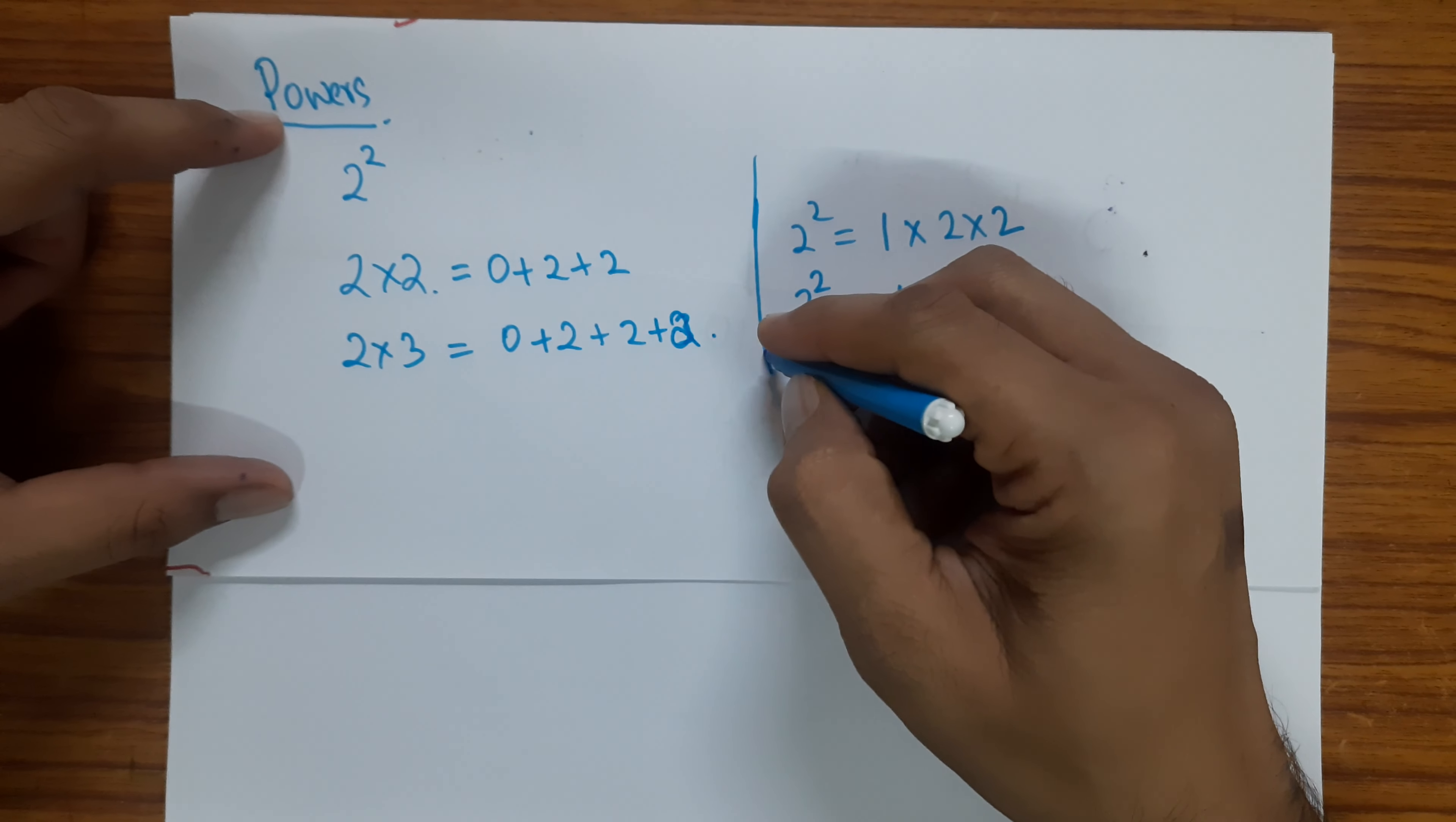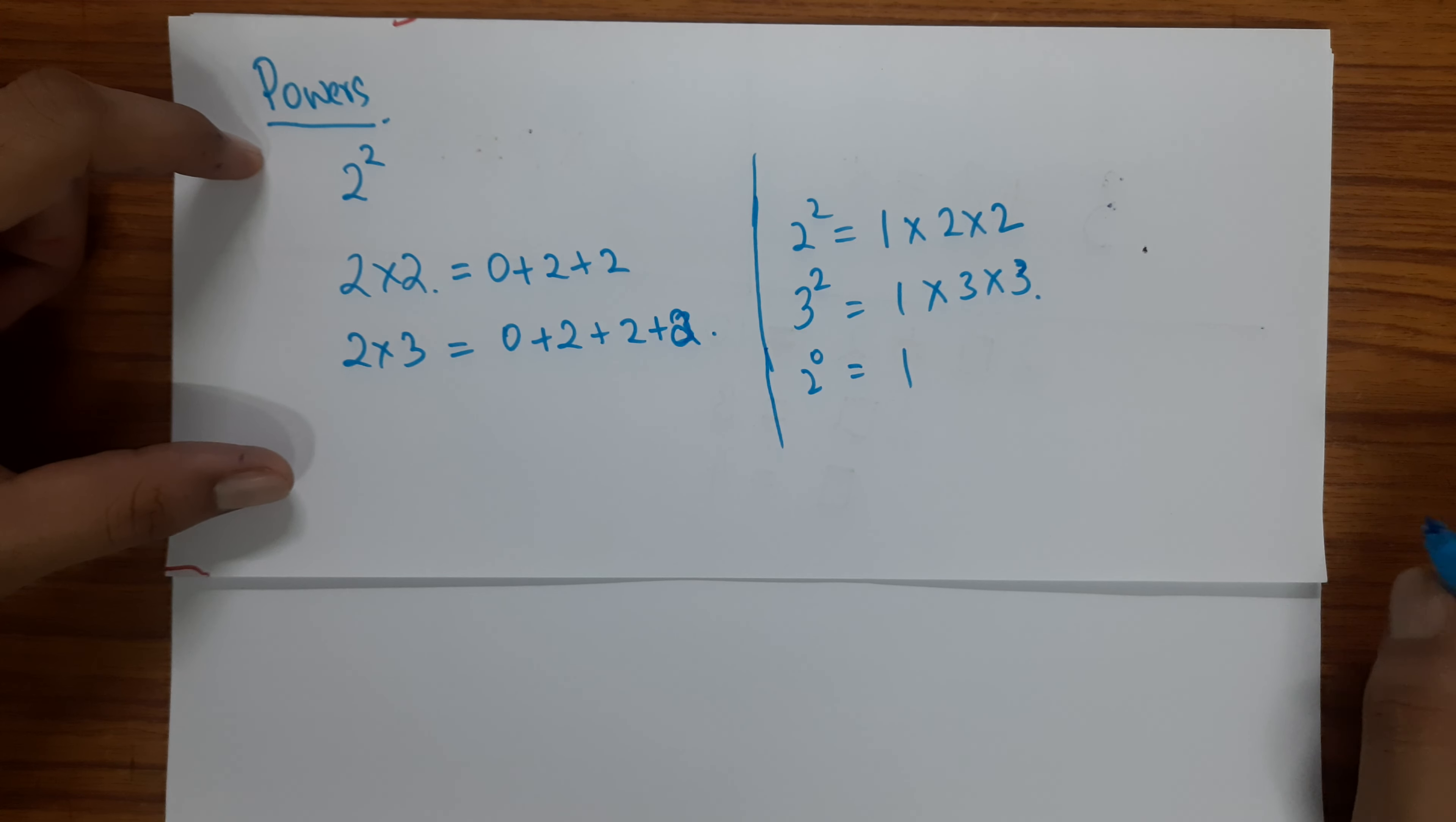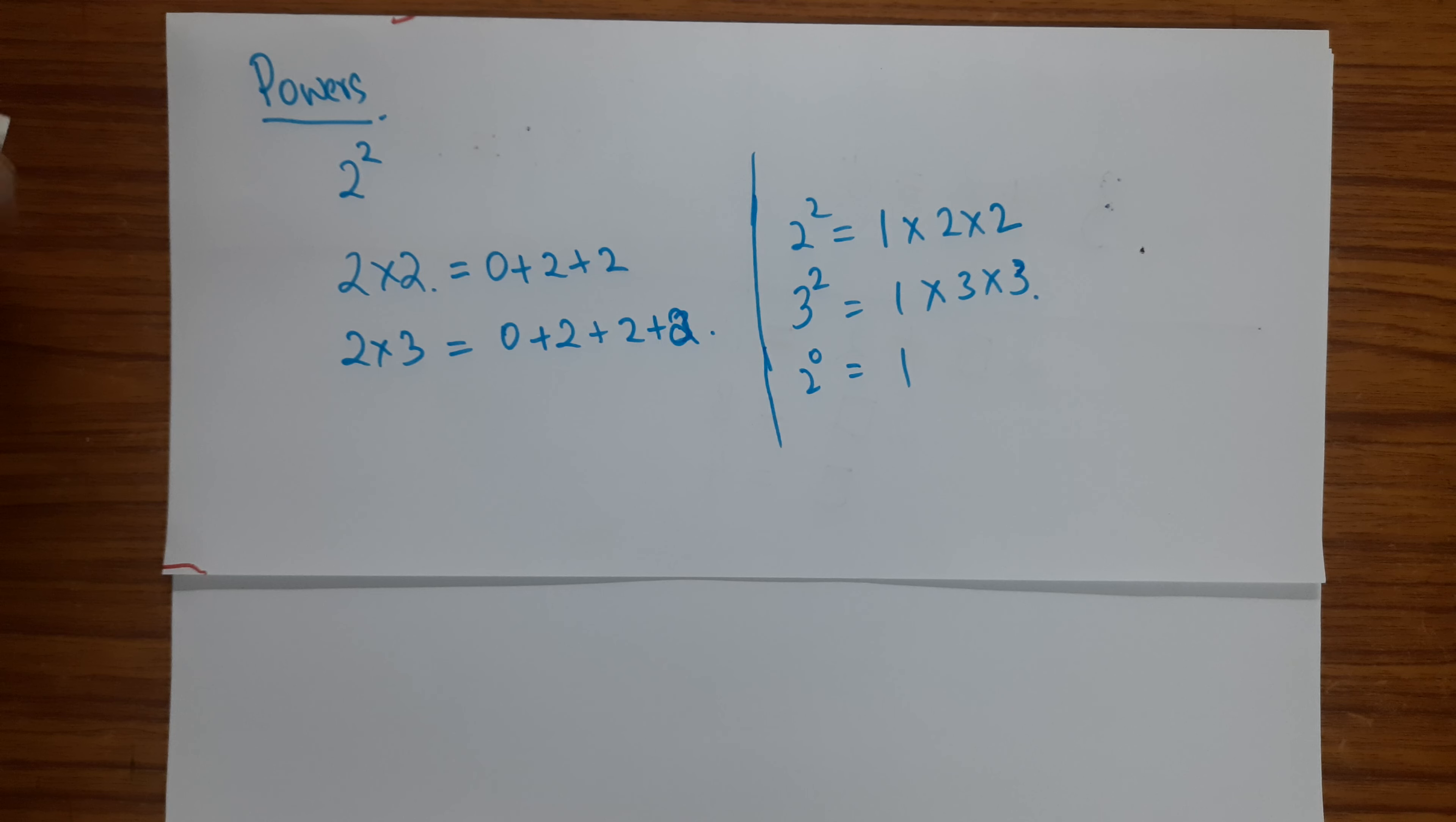So, I would say that we should use this definition for powers rather than a definition that says 2 multiplied by 2 2 times. It's not. That will be 8. It is 1 multiplied by 2 2 times. So this would be a good starting point.